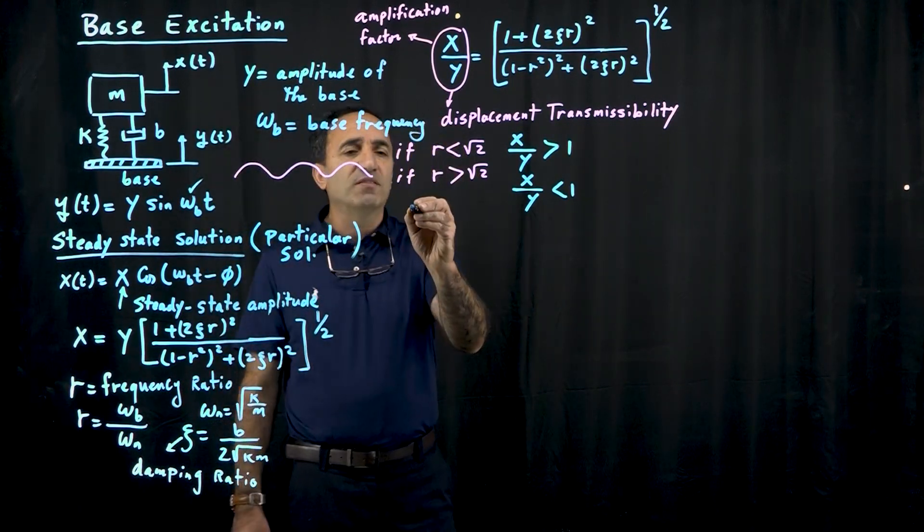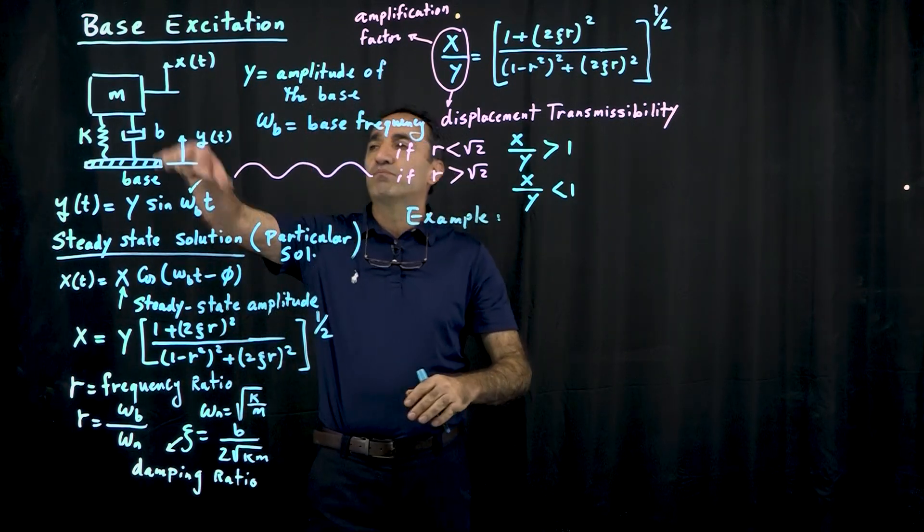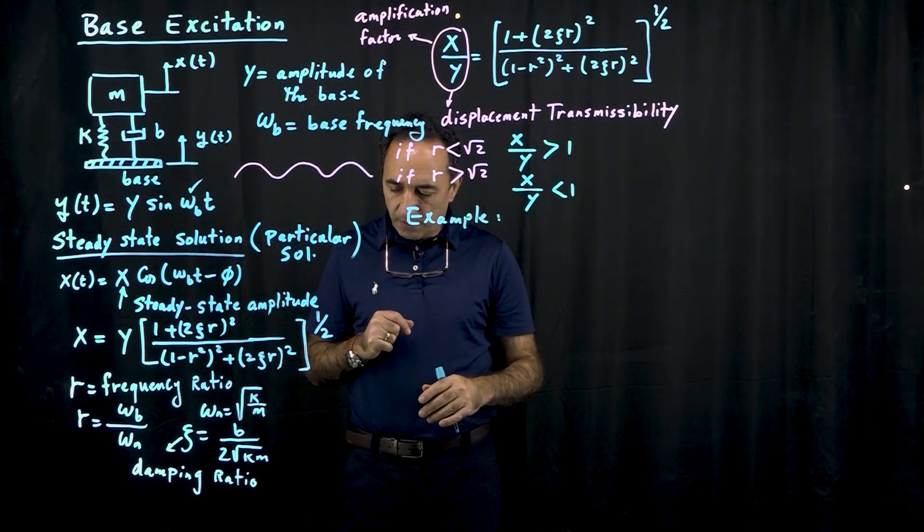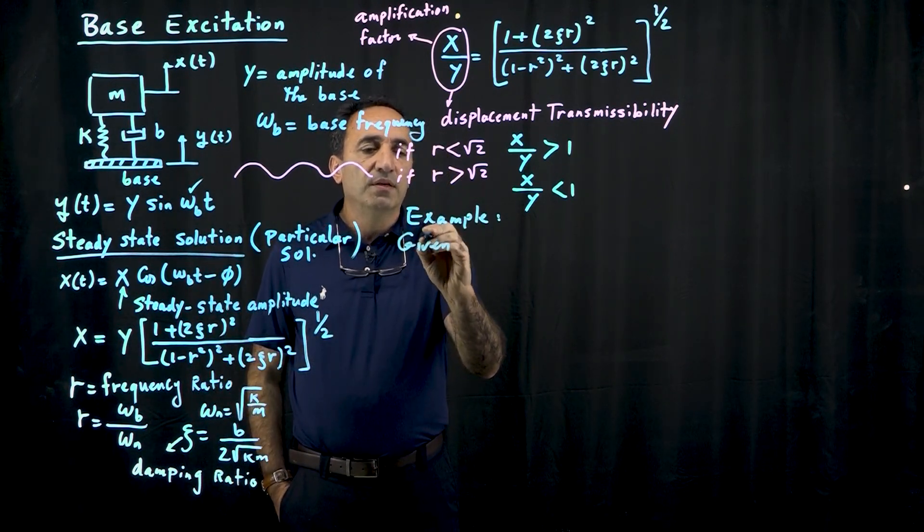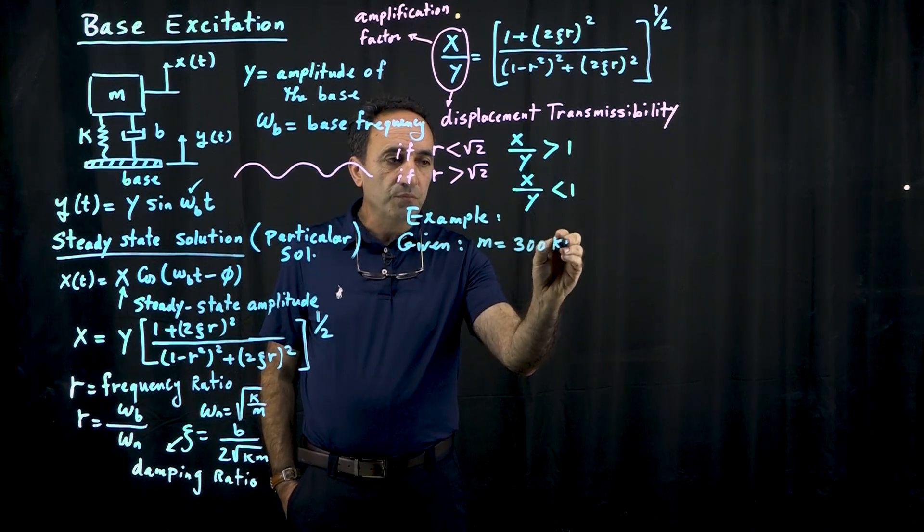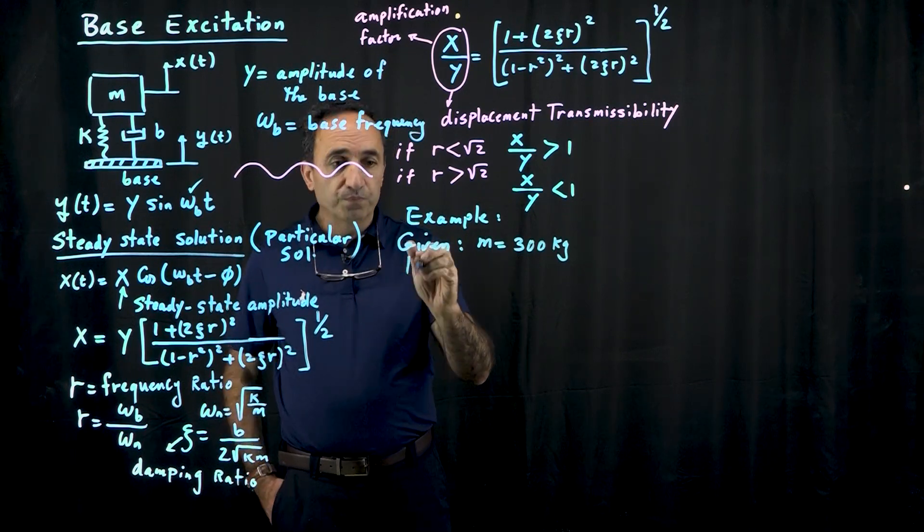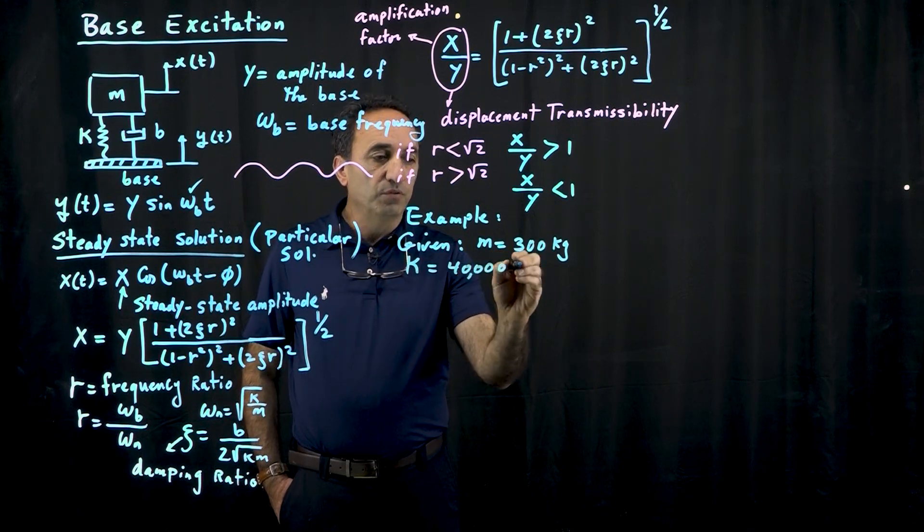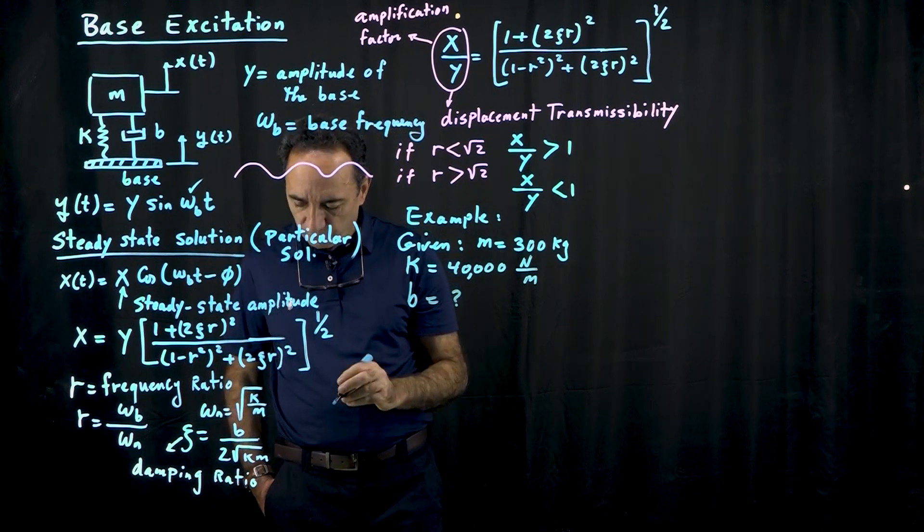So let me show you an example of this now, with numbers. Imagine you have a system, pretty much what we have here, with the mass spring and damper, right? And let's say the mass is given, so these are all given, given the mass to be, say, 300 kilograms. The stiffness is equal to 40 thousand rather, newtons per meters. And the damping ratio is unknown. So this is the one that we are trying to find.